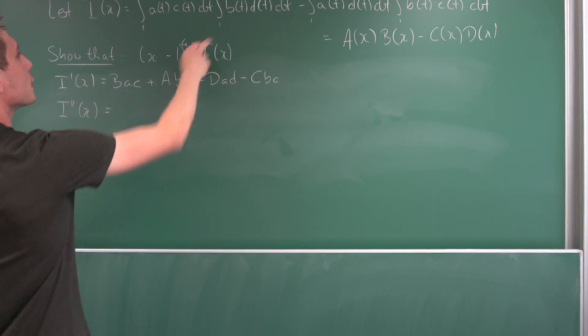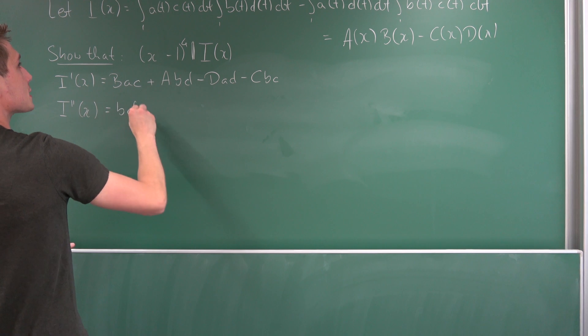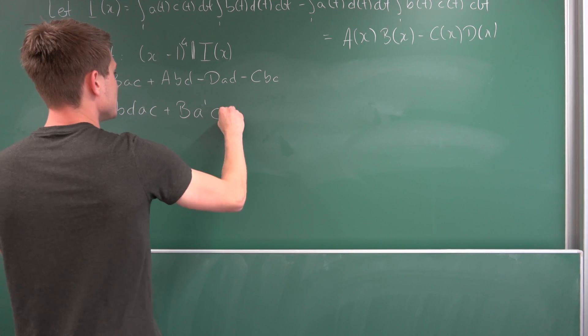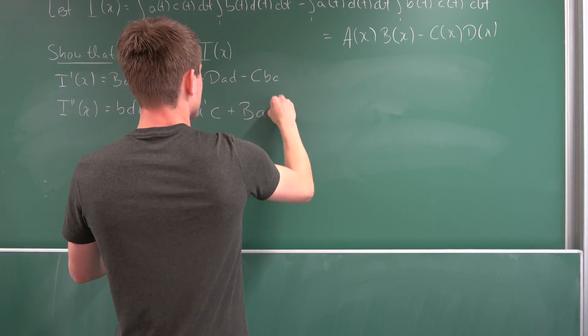Let's differentiate the big one. At first, so B is just B times D, A times C plus B A prime times C plus B A C prime.